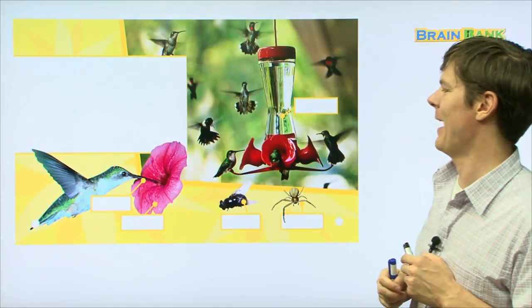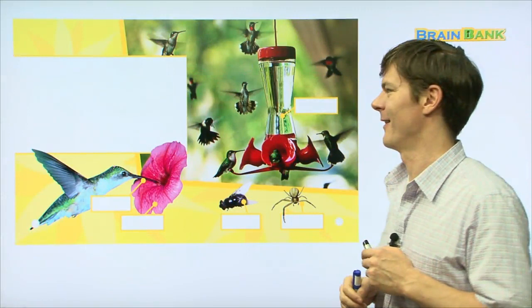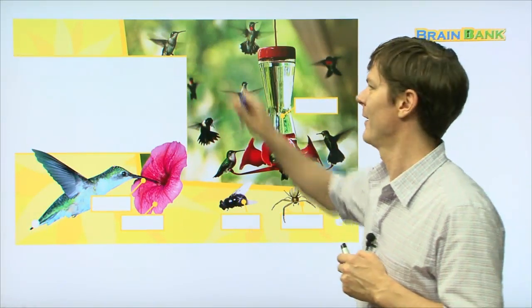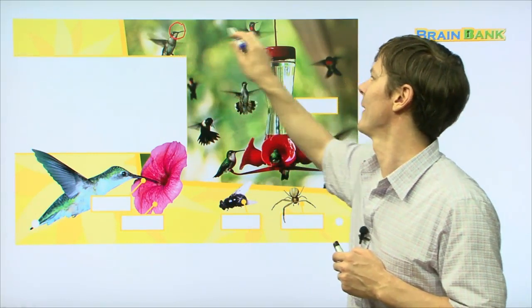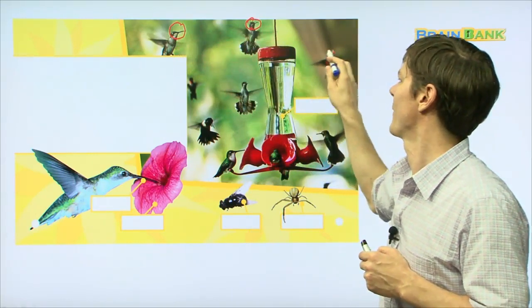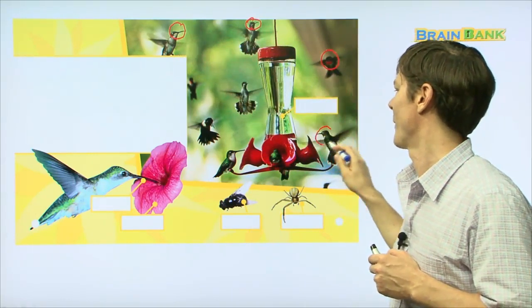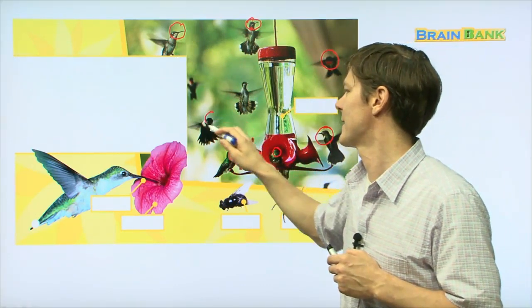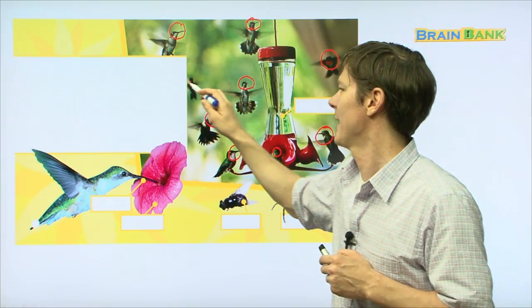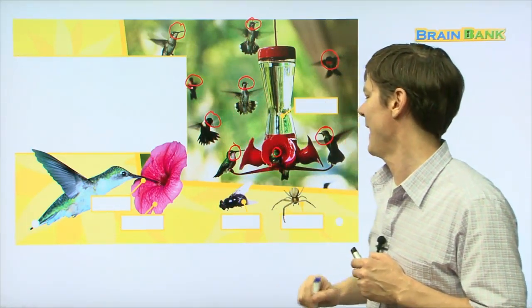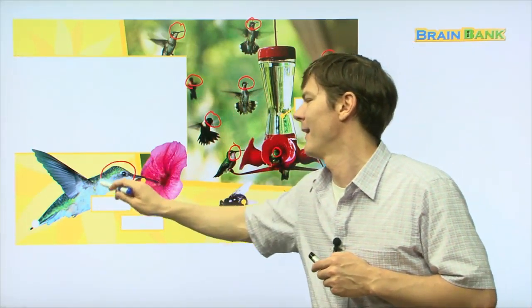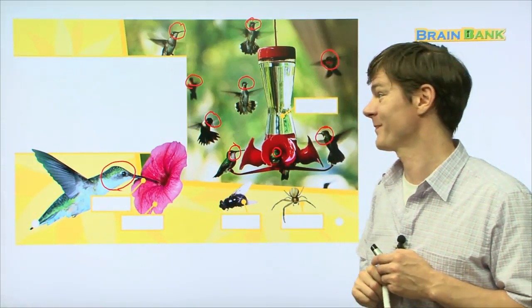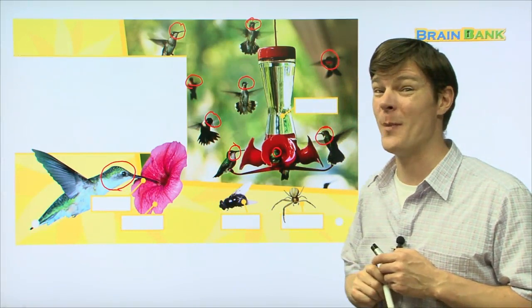Now, look at this picture. Wow! There's a lot going on here. I see a lot of hummingbirds. How about we count them together? So here's one, two, three, four, five, six, seven, eight, nine, and ten. Wow, there are ten hummingbirds on this picture. In this picture, there are so many.